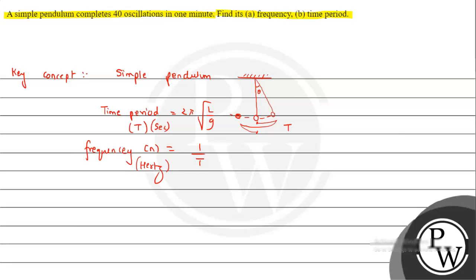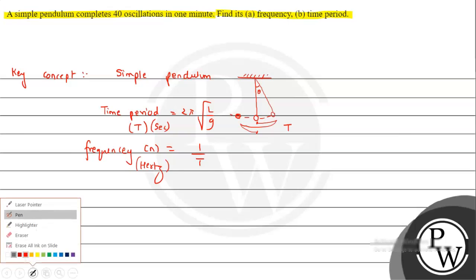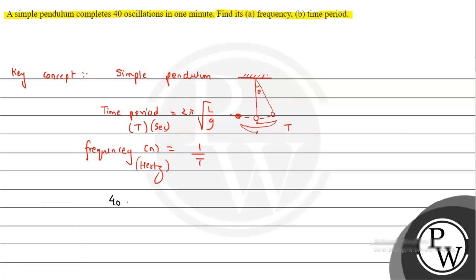We have 40 oscillations in one minute, and one minute means 60 seconds. By the unitary method, we can calculate the time for one oscillation — that is the time period. Time period T = 60 divided by 40, which equals 1.5 seconds.